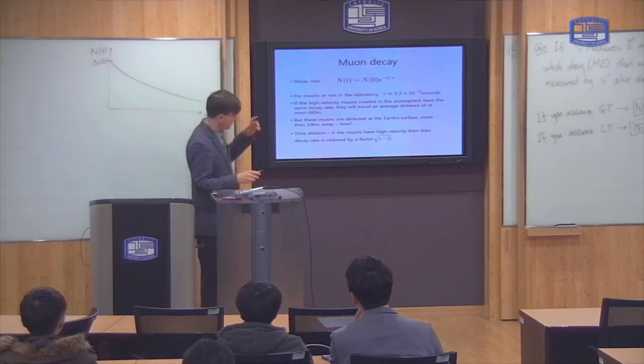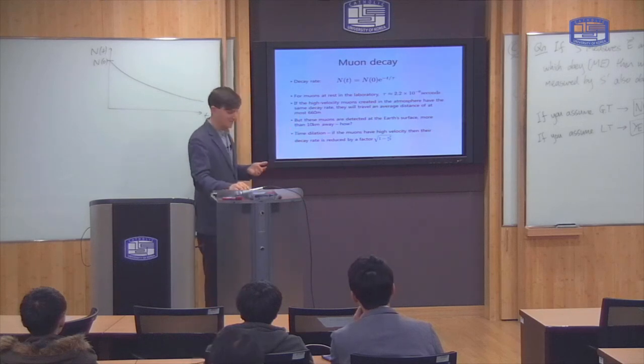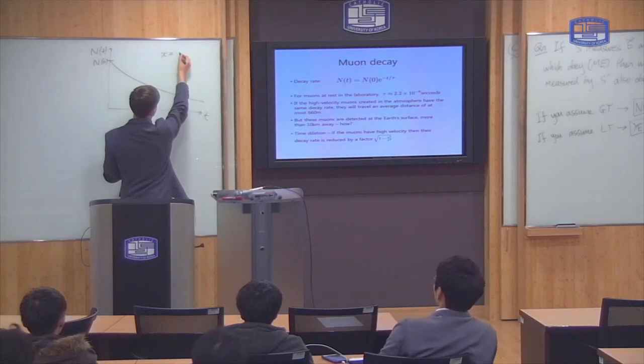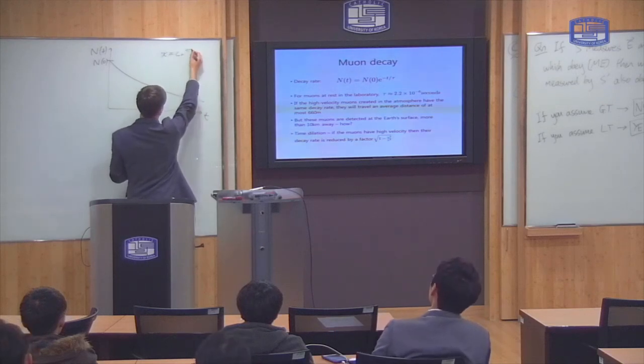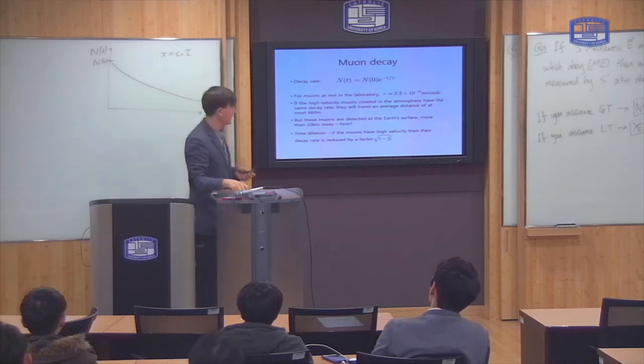So, if there was no time dilation effect, and these muons are traveling at the speed of light, then the total distance they can travel, x, is just equal to their speed times the amount of time they live, which is tau, approximately.